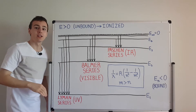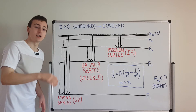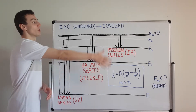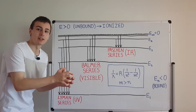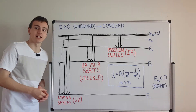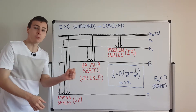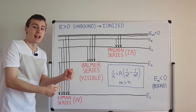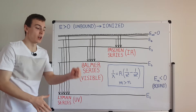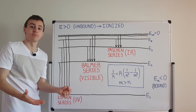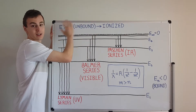The energy levels get closer and closer until in the limit as n goes to infinity they reach zero. Zero is actually the point where the electron gets ionized — ionization is the process where the electron moves from a bound state to an unbound state, leaving the influence of the nucleus. If you're trying to ionize hydrogen, you start with a neutral hydrogen atom — one proton and one electron — and give that electron enough energy to escape, leaving one proton by itself: an H+ ion. The electron becomes a free particle with positive energy.